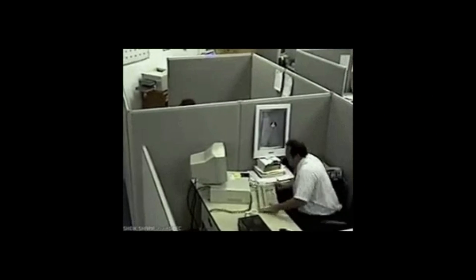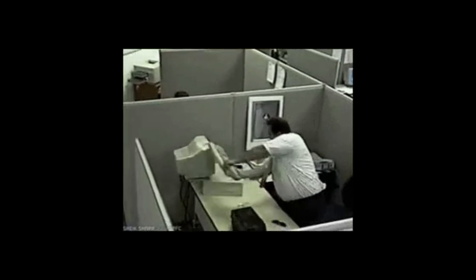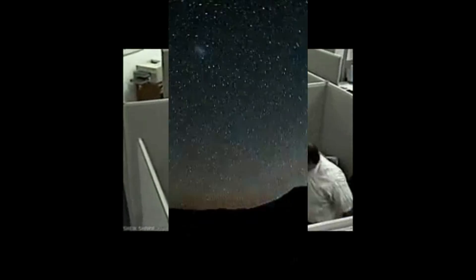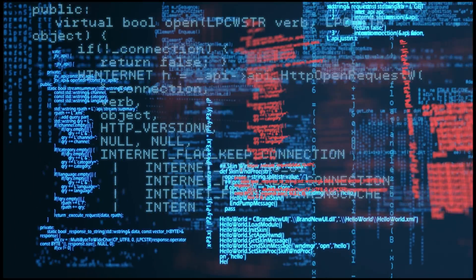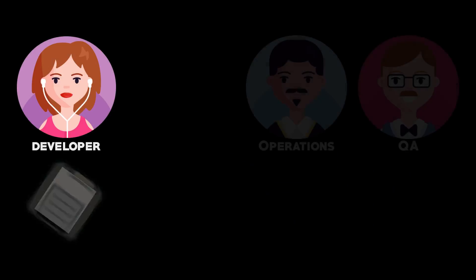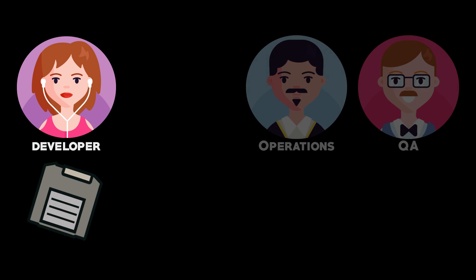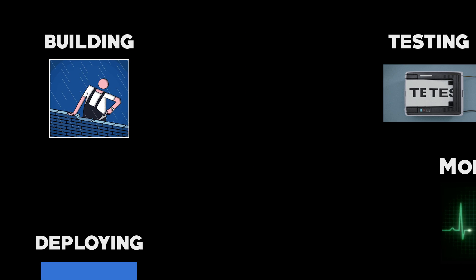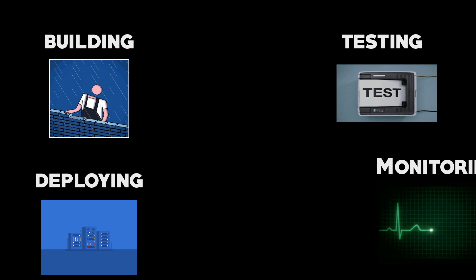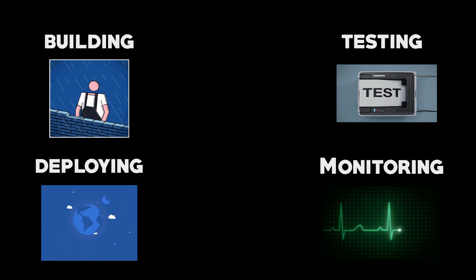Developers would spend days and nights writing thousands of lines of complex code for months. When they had finally finished their tasks, they handed the software over to the QA and operations teams for building, testing, deploying, and monitoring.